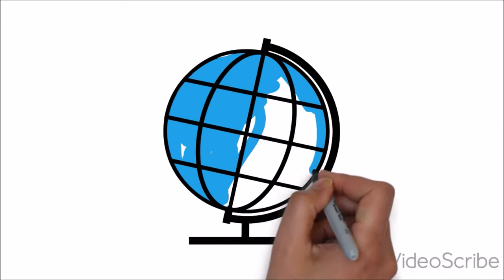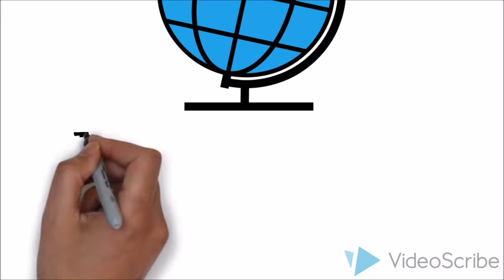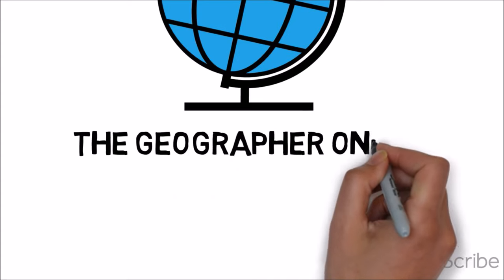Hello everyone. In this video we're going to be looking at a river feature that forms in the upper section of the river and it's an erosional feature. This is called a V-shaped valley.